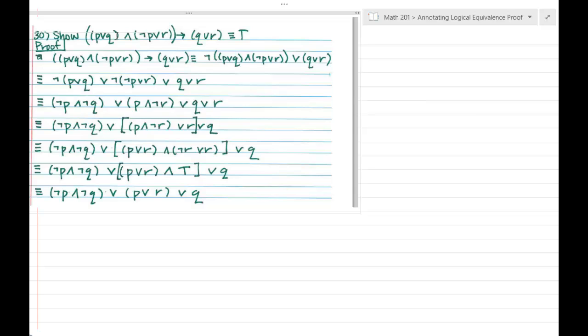So number 30, we're trying to prove that some compound proposition is a tautology. It looks like we're starting on the left hand side and applying the equivalence that p implies q is logically equivalent to not p or q. So hypothesis implies conclusion is logically equivalent to the negation of the hypothesis or conclusion.